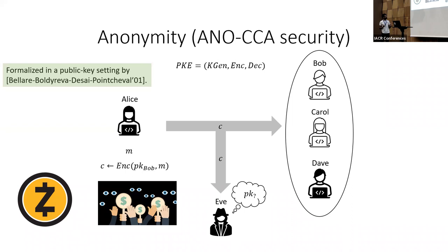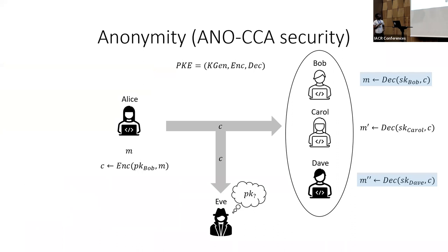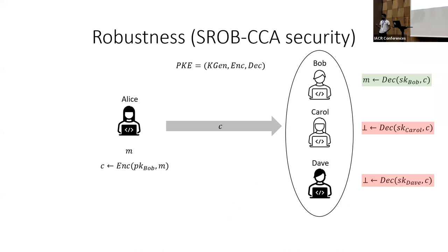Now because of anonymity, even users Carol and Dave should not be able to tell who was the intended receiver of Alice's message. The naive thing all of these users would do is try to decrypt the received ciphertext using their respective secret keys. If Dave, upon obtaining ciphertext c from Alice, decrypts it using his own secret key and gets back some valid message m-double-prime, he might mistakenly think Alice wanted to send that message to him. To prevent such ambiguity, we additionally require a complementary security property known as robustness, or SROB-CCA. Strong robustness guarantees that it's hard to come up with a ciphertext that decrypts validly under two different secret keys — so Carol and Dave should get back an error, implicitly meaning the message was not intended for them.